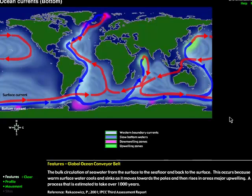This happens because surface water cools, sinks, and moves toward the poles, then rises in the major upwelling zones. This could take over a thousand years — a pretty long circulation time for water to get from the deeper areas to the surface and back down. The global conveyor belt connects these different gyres to one another over thousands of years.